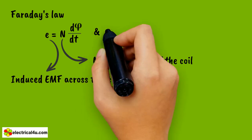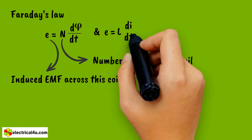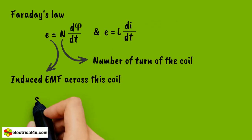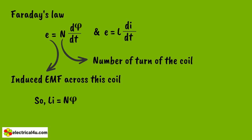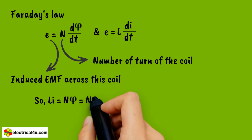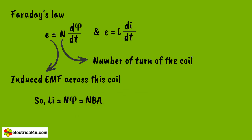L di dt. Li is equal to N phi, which is again equal to N into B into A, where B is the flux density.